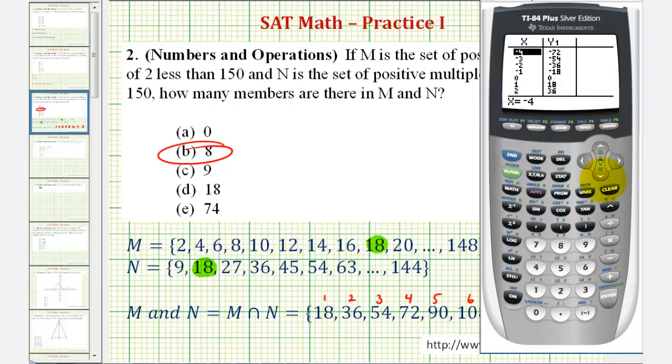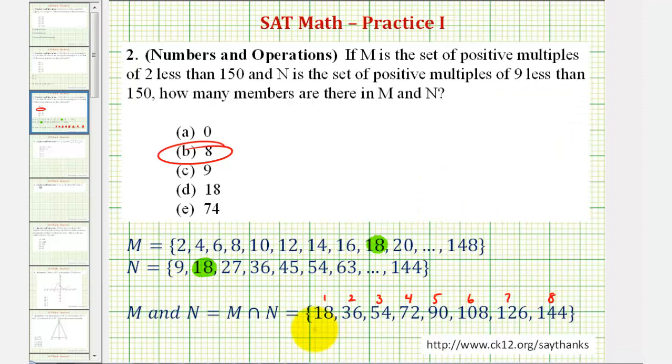And now we're going to press second graph, and we'll start at 18, since that's the first positive multiple of 18, and we'll determine how many multiples of 18 there are that are less than 150. Counting through the table, we have one through eight. Notice the next multiple of 18 is not less than 150, so there are eight multiples of 18 that are positive and less than 150. So using the table feature here would be a lot less time-consuming than completing the list of multiples of 18 by hand, which we did here at the beginning.